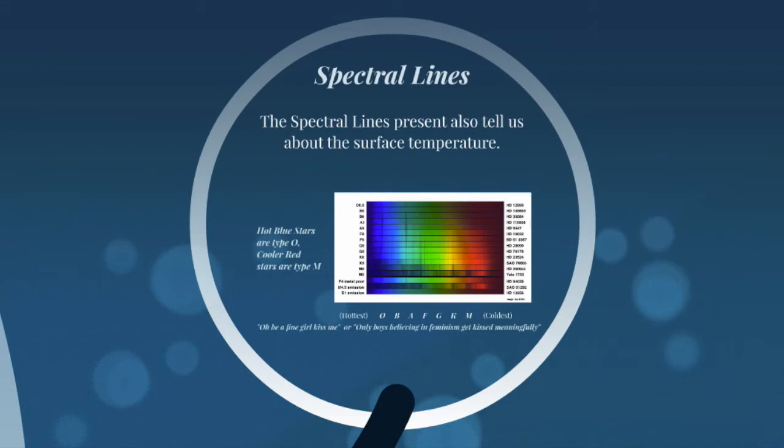If I see spectral lines from molecules, the star is not going to be as hot because molecules have not yet been ripped apart into their component elements. So that's going to be a much cooler star.